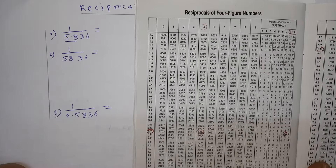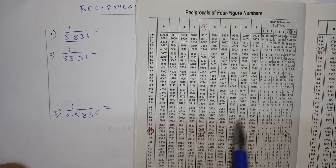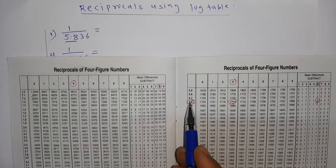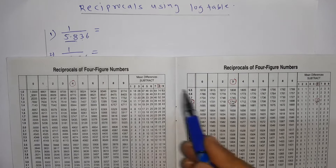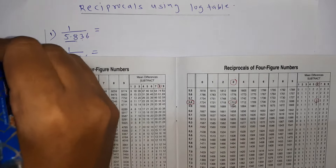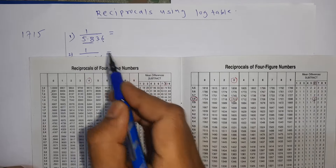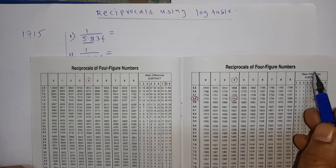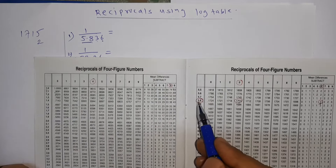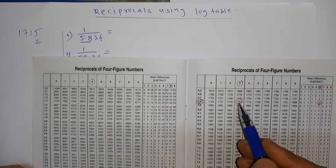So let us now find the reciprocal of 5.836. The first two digits are 5.8 — we look in this column, here I already did the marking: 5.8. The third digit is 3, which gives 1715. The fourth digit is 6, and looking at the mean difference column for 6, that equals 2.